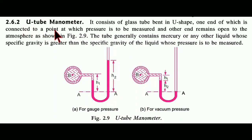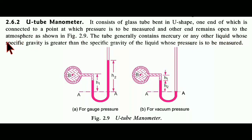A U-tube manometer consists of a glass tube bent in a U-shape. One end is connected to the point at which pressure is to be measured, and the other end remains open to the atmosphere, as shown in figure 2.9. The figure shows two U-tube manometers: the one on the left is for gauge pressure and the one on the right is for vacuum pressure.